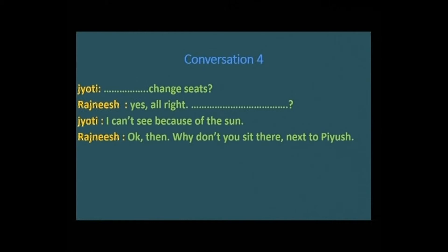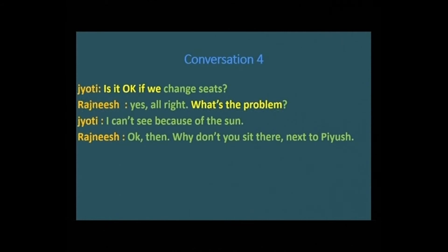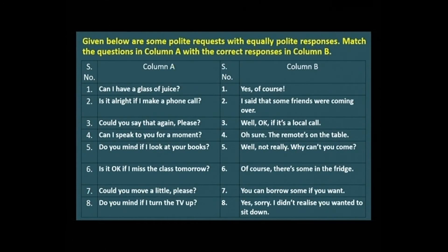Conversation four. Jyoti says: 'Is it okay if we change seats?' Rajneesh says: 'Yes, all right. What's the problem?' Jyoti says: 'I can't see because of the sun.' Rajneesh says: 'Okay, then why don't you sit there next to Piyush?' The phrases filled are 'is it okay if we change seats' and 'what's the problem.'